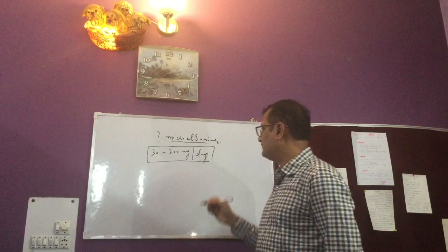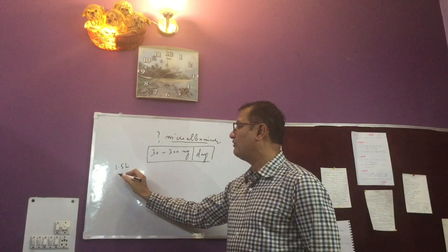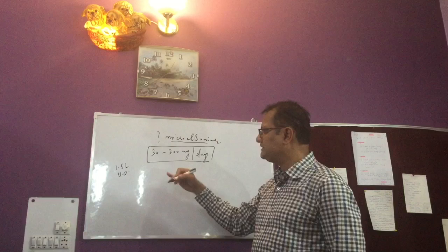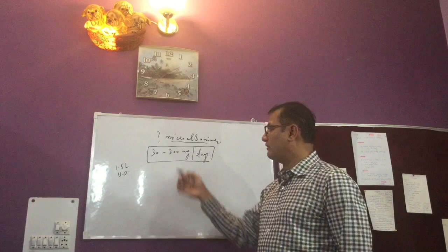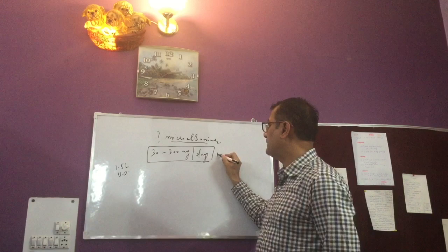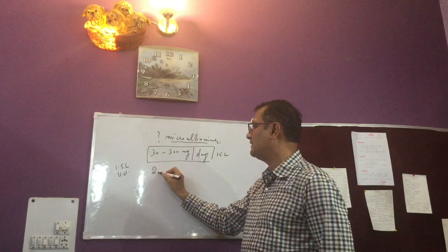So some authors suggested that why not, since we know that it is 1.5 liters of urine output typically a person produces, change the definition and ask the patient that you come up with 1 liter of urine. So obviously, 30 to 300 milligrams per day means 30 to 300 milligrams per 1.5 liters of urine.